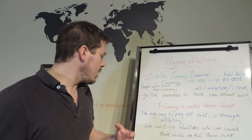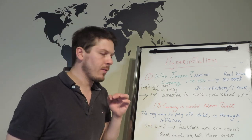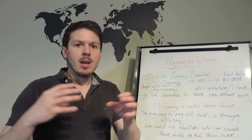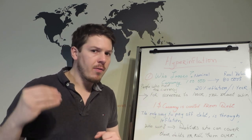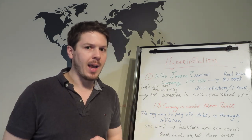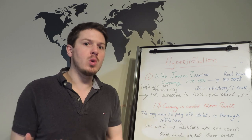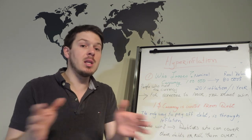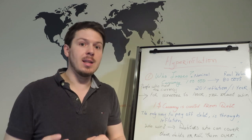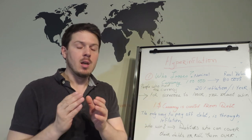First of all, let's remember how money is created. Currency is created from debt. The only way to pay off debt is through inflation. The government and the Federal Bank can't pay off physically their debt. The only tool that they have is to print more money, which creates inflation.